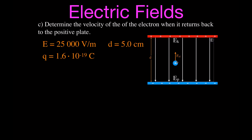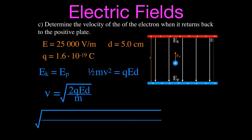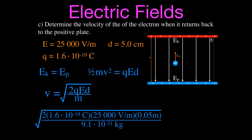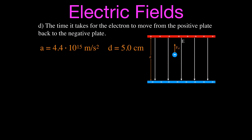For part C, we find the velocity when the electron reaches the positive plate. Using conservation of energy — potential energy equals kinetic energy — we set QED = ½mv² and solve for velocity: v = √(2QED/m). Plugging in the values gives a velocity of 2.1 × 10⁷ meters per second.